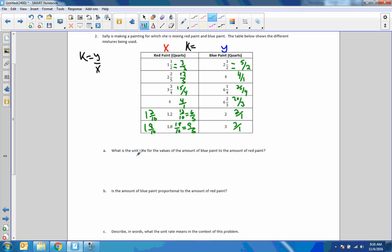Now we're going to answer the question, what is the unit rate? In other words, what is k? K equals y over x. I'm going to use the first one. Y is 5 halves over x, 3 halves. Flip it and switch it. The 2's cancel, and I'm left with 5 times 1 over 1 times 3. So the unit rate is 5 thirds, or 1 and 2 thirds. That is the amount of blue paint to the amount of red paint.